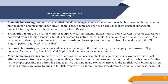Semantic borrowings are words where a new meaning of a unit already existing in the language is borrowed. For example, the meaning 'to live' for the word 'to dwell', which in Old English had the meaning 'to wander'. Or the meaning 'gift' (present), for the word 'gift', which in Old English had the meaning 'bride price' or 'payment'.